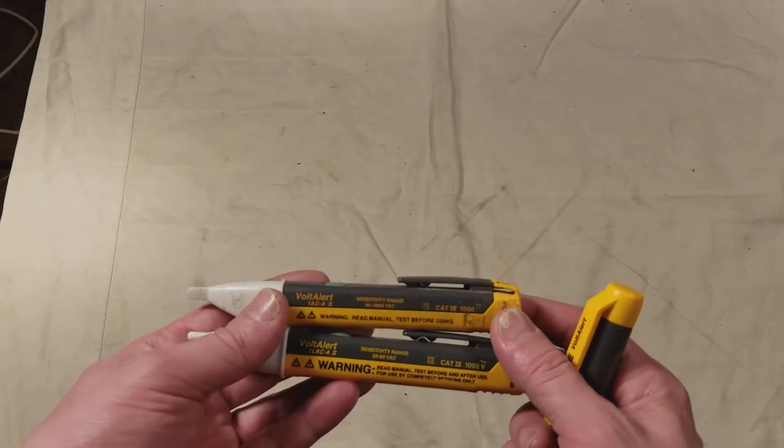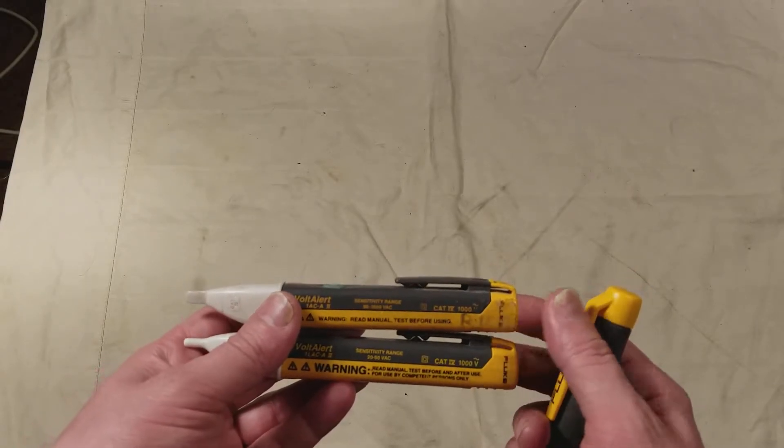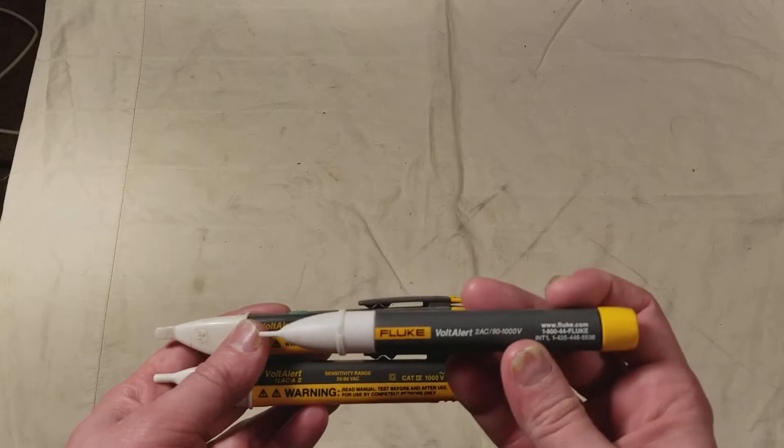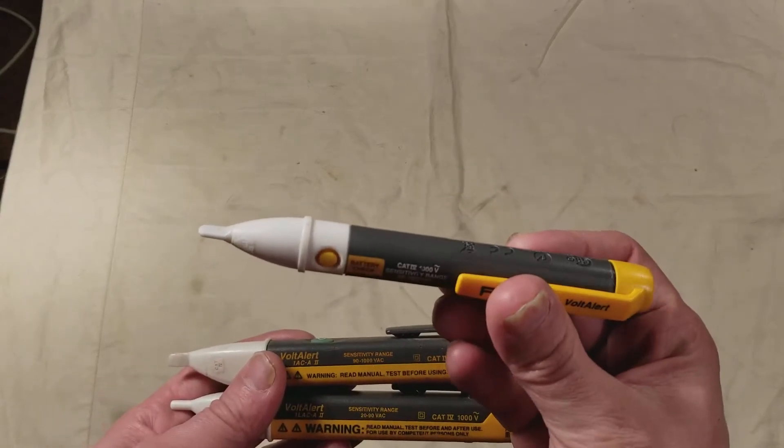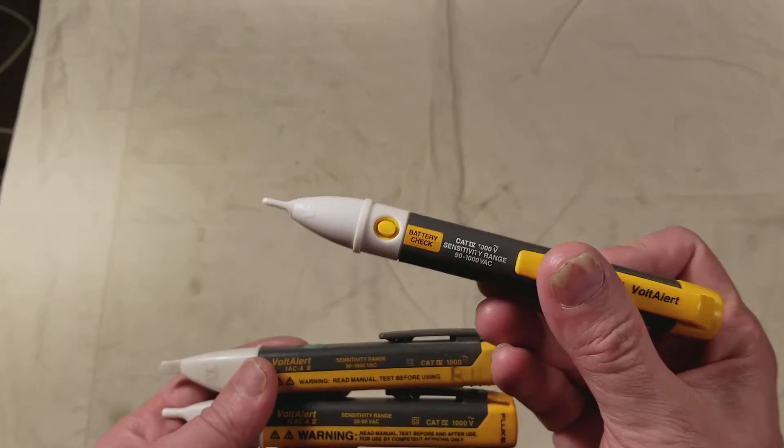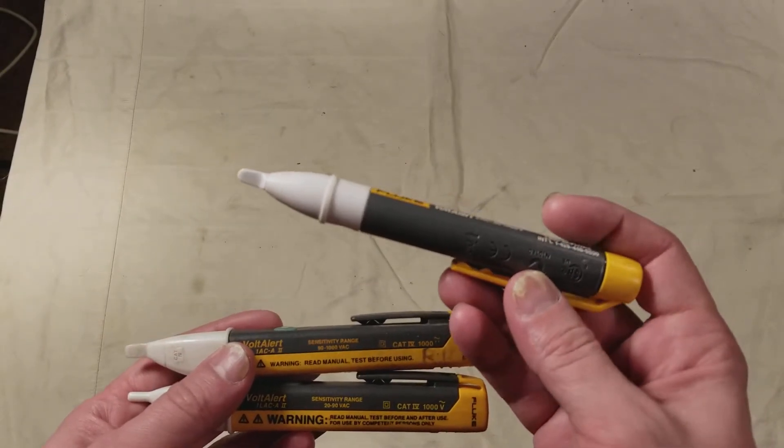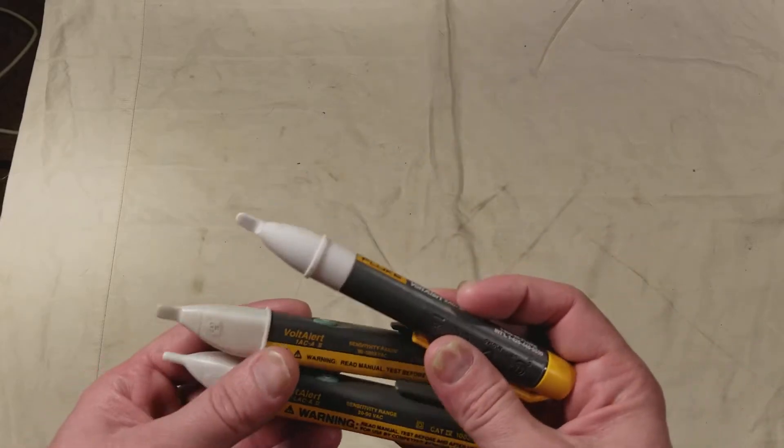We have the 1AC-A2, which is the 90 to 1000 volts AC, and then we have a 2AC, which is the newer one, which is a little thinner, more pen-type that's technically always running, and that's the 2AC.